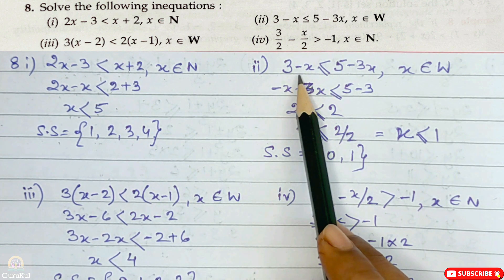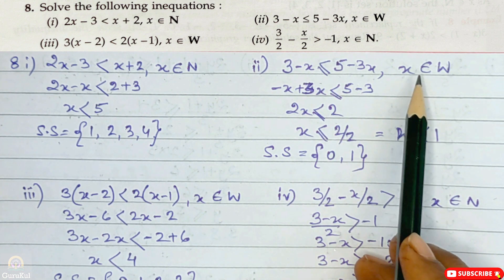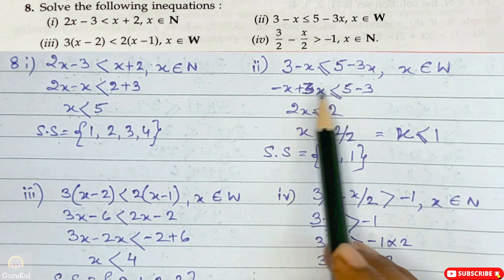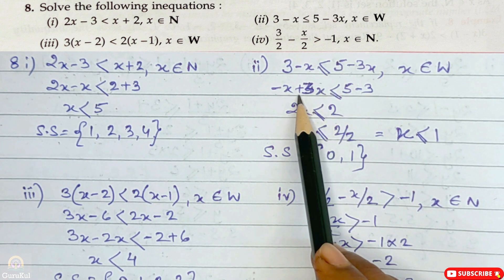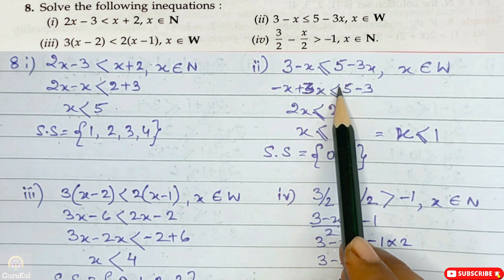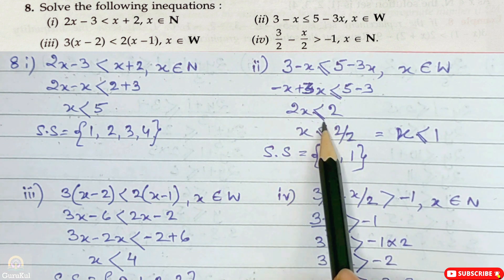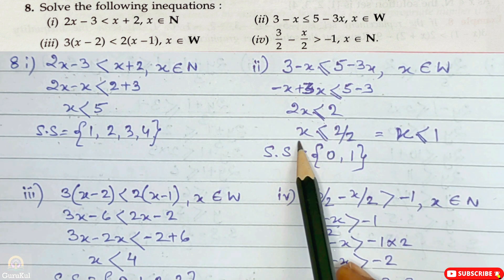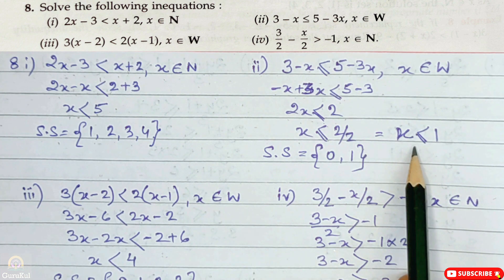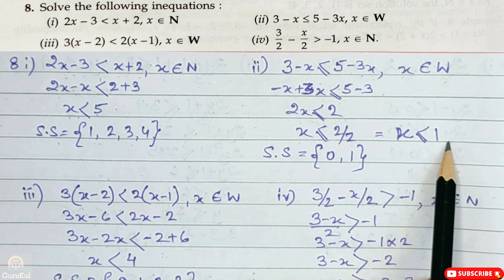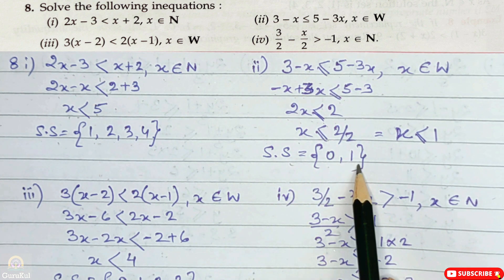Now the second part: 3 minus x less than or equal to 5 minus 3x, where x belongs to whole number. Bringing minus x and minus 3x together: minus x plus 3x less than or equal to 5 minus 3. So 2x less than or equal to 2. Therefore x is less than or equal to 2 by 2, hence x is less than or equal to 1. Our solution set is 0 and 1.